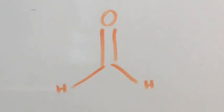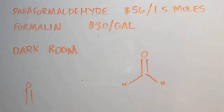I looked on Amazon and eBay. Paraformaldehyde is 56 dollars for a bottle. That's one and a half moles for 56 bucks. A gallon of formalin, which is formaldehyde in water, usually like 34, 35, 40 percent formaldehyde, is 30 dollars a gallon, give or take. I've seen some for 25 a gallon.